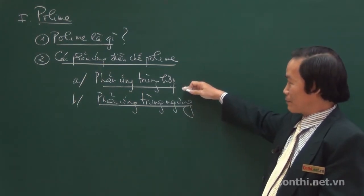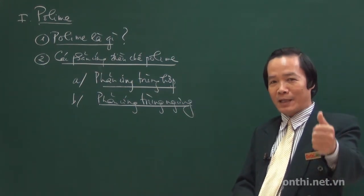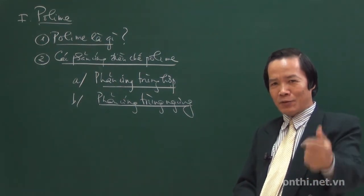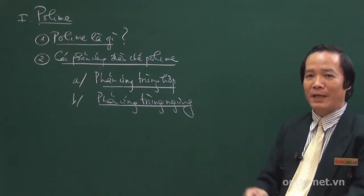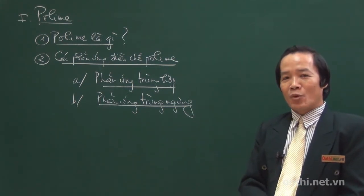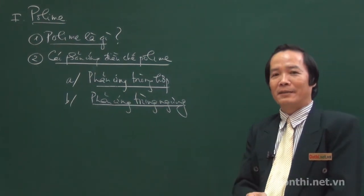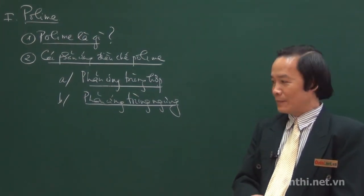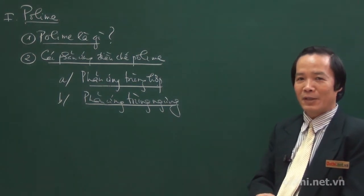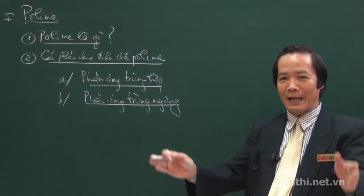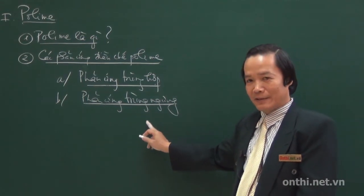Phản ứng trùng hợp có thể điều chế cao su buna-S hoặc cao su buna-N từ hai loại monomer khác nhau, tuy nhiên chương trình phổ thông không hỏi tới mức đó. Tương tự, phản ứng trùng ngưng trong chương trình thi tốt nghiệp cũng không điều chế những polymer đi từ hai loại monomer khác nhau, vì thế ta chỉ nghiên cứu những phản ứng trùng ngưng đơn giản thôi.